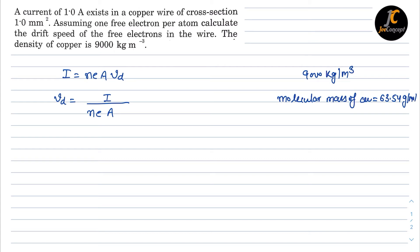Right, so now we can calculate the number of moles. So number of moles or the number of molecules will be 9000 divided by 63.54. Now this is given in gram so we will convert in kg, so 10 raised to minus 3. So this will become 1.42 into 10 raised to power 5.